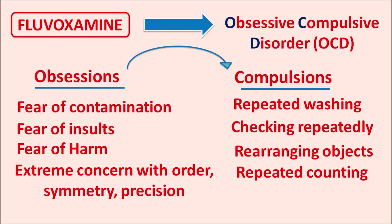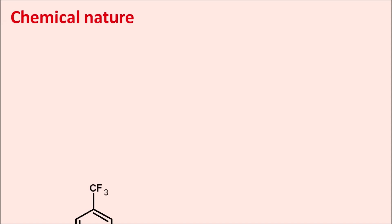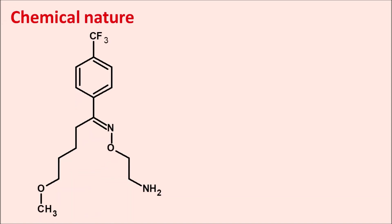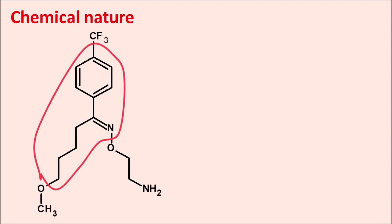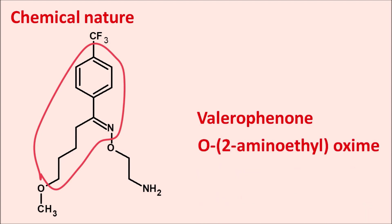Now let us look at the chemical nature of fluvoxamine. The structure has a phenyl ring with a five carbon chain, and this five carbon chain forms an oxime at the first position. This phenyl ring with the five carbon chain is the valerophenone. This valerophenone forms an oxime with a two aminoethyl chain — written as O-2-aminoethyl oxime.